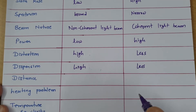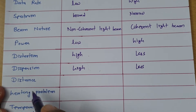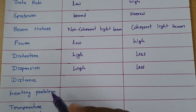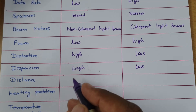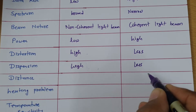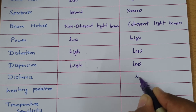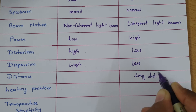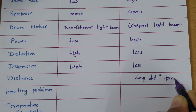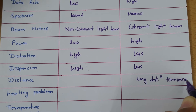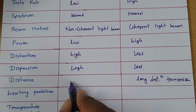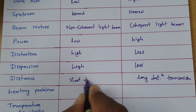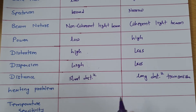In terms of distance, laser is used for long distance transmission of signal, while LED is used for short distance transmission.